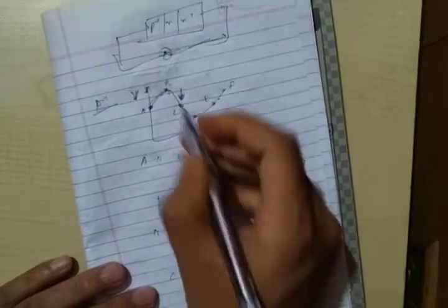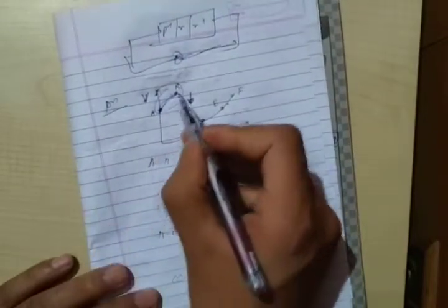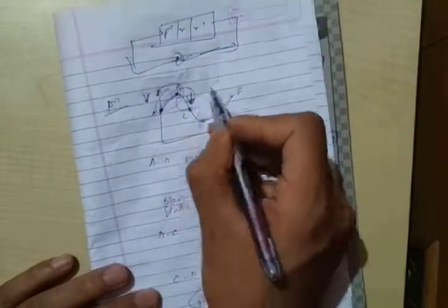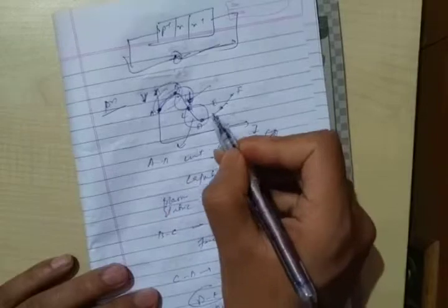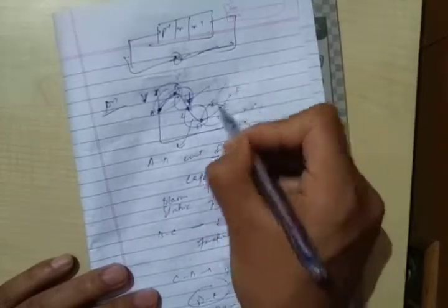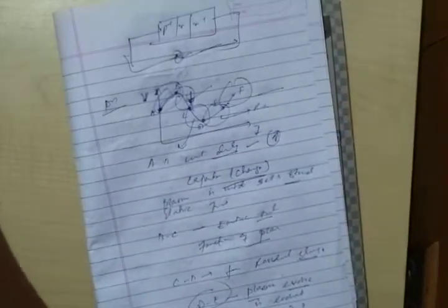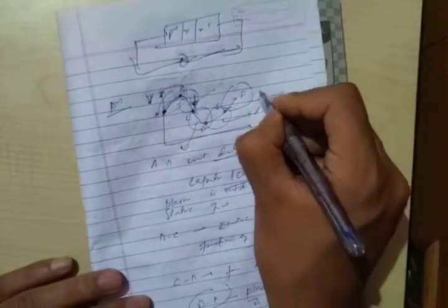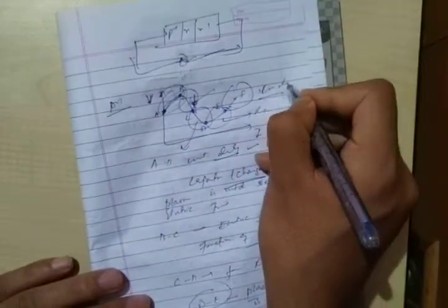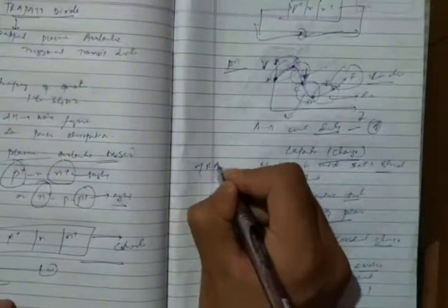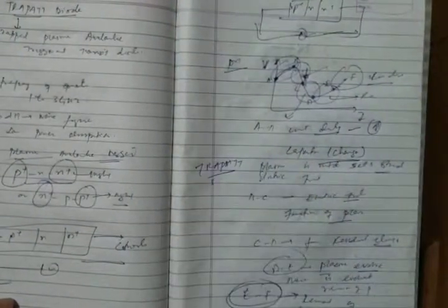From A to B it behaves as capacitor. From B to C there is a plasma formation. From C to D residual charge generation. From D to E there is a removal of plasma. From E to F there is residual charge extraction. This is all about the working operation of TRIPAD diode. Thank you.